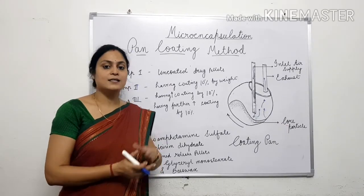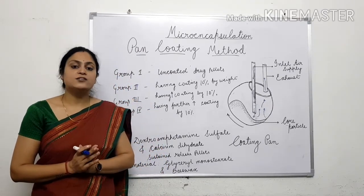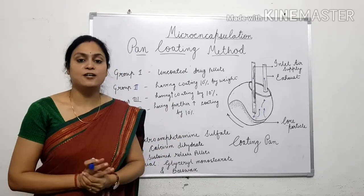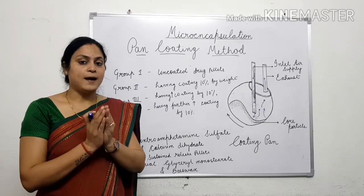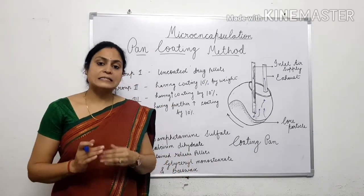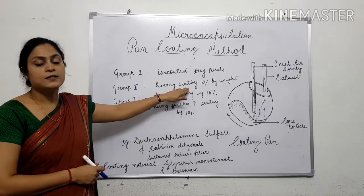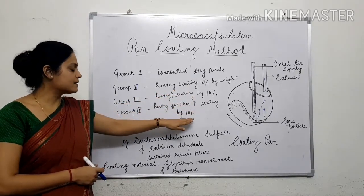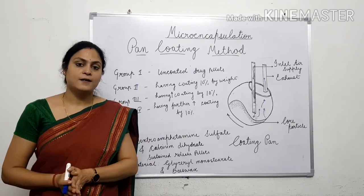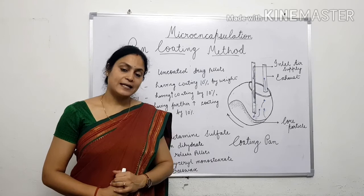In sustained release pellets, these 4 groups are uniformly mixed and they can be filled into a hard gelatin capsule. When this hard gelatin capsule containing these types of pellets is administered, there are certain pellets from Group 1 which are readily available to release drug — so they will immediately release the drug. After some time, Group 1 pellets release drug, then Group 2, and lastly Group 4 pellets will release drug. In this way, the drug is released in a sustained manner. This is the main application of the pan coating method — to formulate sustained release pellets.